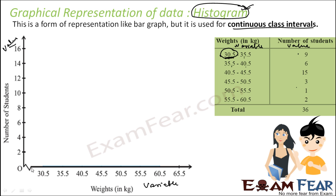Since the variable is not starting from 0, we put a kink or break on this line. So starting at 30.5, after every 5 cm we place 35.5, 40.5, 45.5, and so on, making sure we go all the way to 60.5.